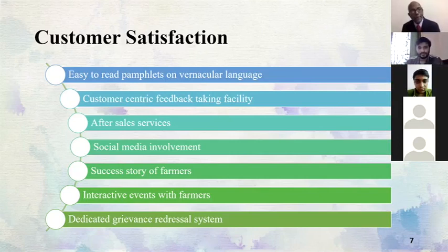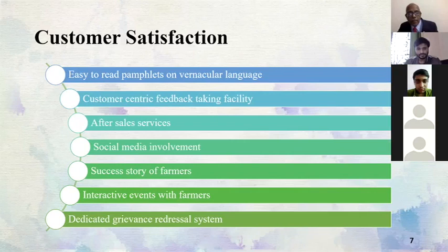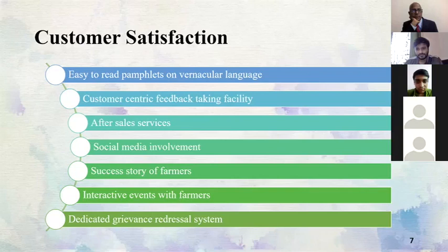Customer satisfaction should be the top priority in achieving customer excellence. The communication barrier is most important, which is why we should use easy-to-read pamphlets in vernacular language so that farmers and customers can understand them. Next, customer-centric feedback — it's not only about taking feedback and leaving it; we should focus on whether the customer is actually satisfied, be the best listeners, and be courteous. After-sales service is also very important. We should not just provide a service and leave; we need to understand what the customer is experiencing and show empathy.